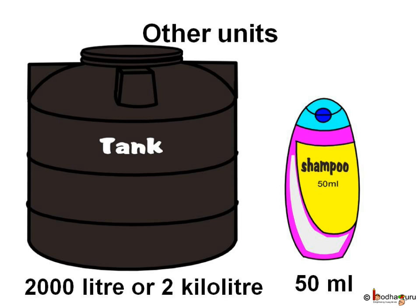The standard unit of capacity is litre, which is most commonly used. The other commonly used unit is millilitre, where 1 litre equals 1000 ml. If we have to measure bigger capacity, we use kilolitres — 1 kilolitre is equal to 1000 litres, used to measure the capacity of big tanks.